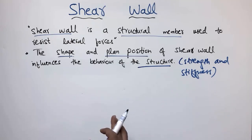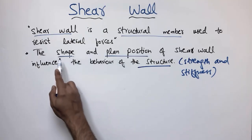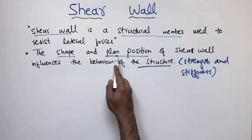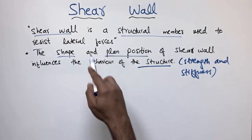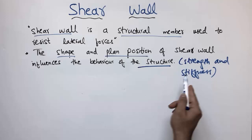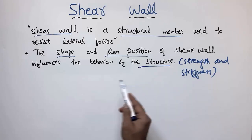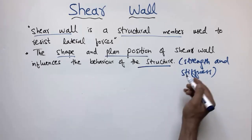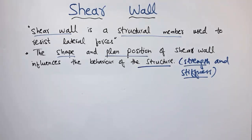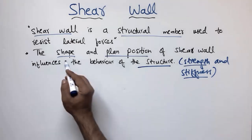It is very important to provide an optimized shape and the right position of the shear wall in your structure so that it increases the stiffness and strength of the building. Otherwise, you will not increase the stiffness of the building if you place the shear wall in the wrong location or in a non-optimized shape.